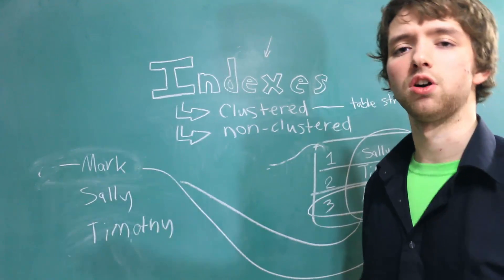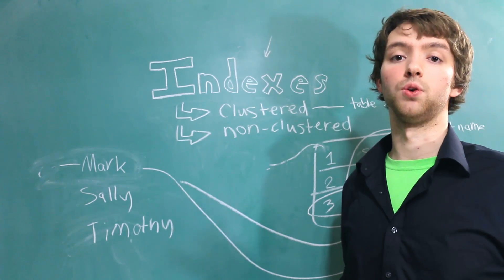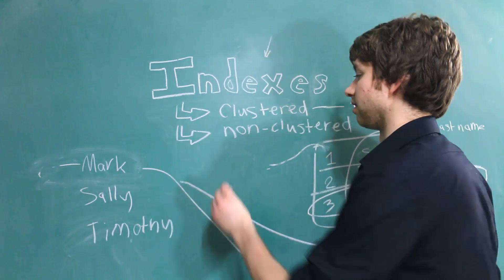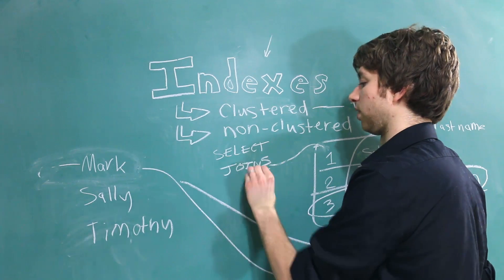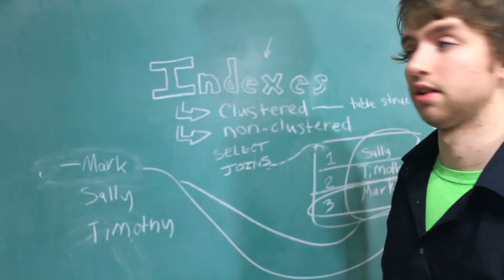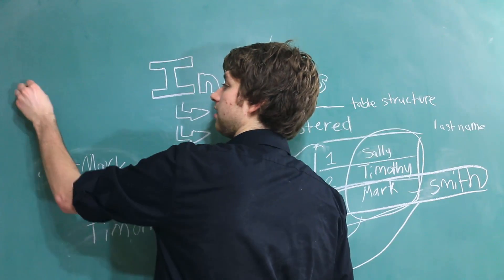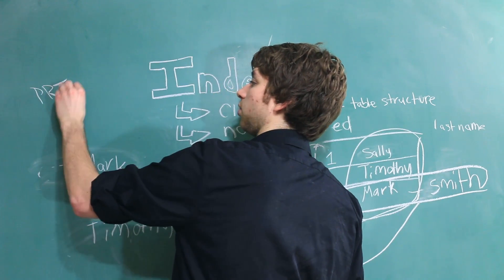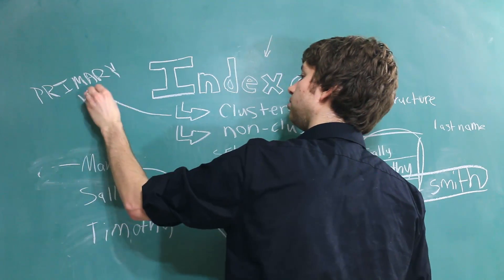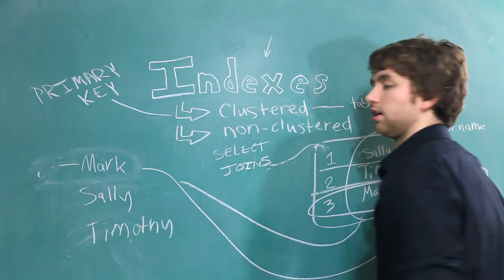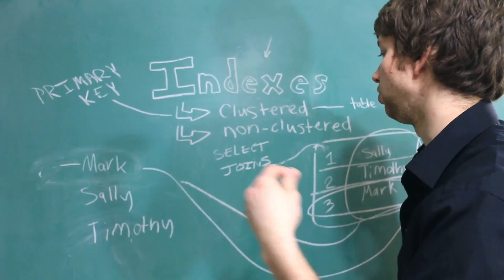So what do you want to index? I know this video is kind of running long so I'll try to keep it simple. Essentially, you want to index anything you're going to commonly use for a select and also joins, which we will discuss in more detail as time goes on. So this generally includes the primary key. Which, by the way, anything labeled primary key is going to be a clustered index by default. So you usually do not have to worry about the primary key.